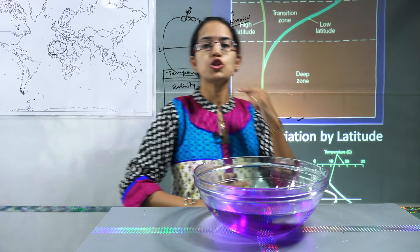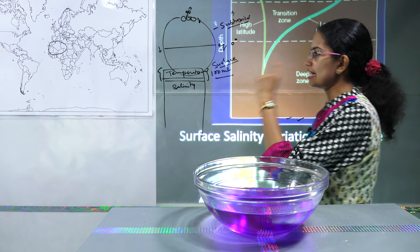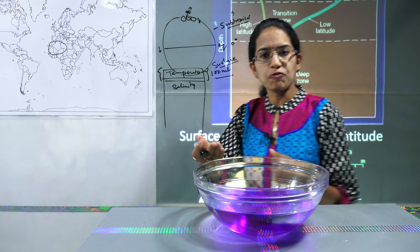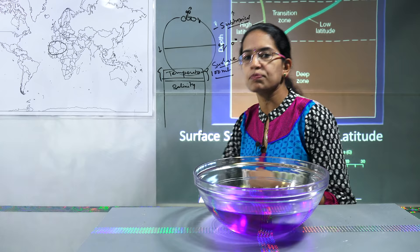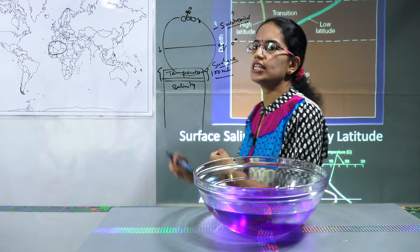However in the surface layers — that's the ocean currents we talk about — we have variations in temperature, and therefore we talk about warm currents and cold currents. In the lower layers or deep ocean waters, the circulation is predominantly due to salinity.